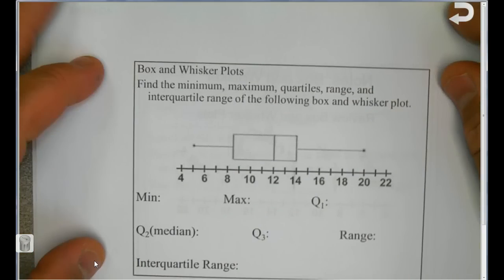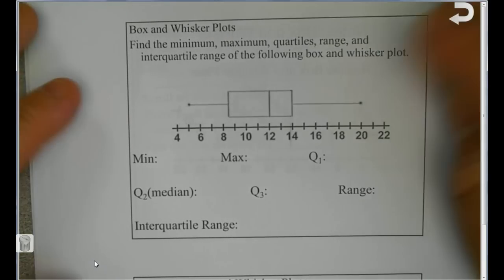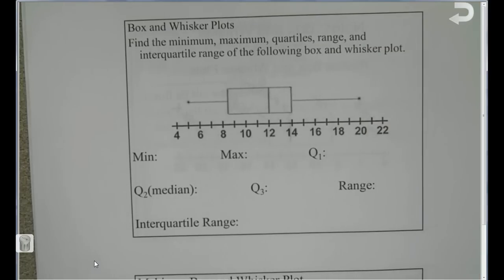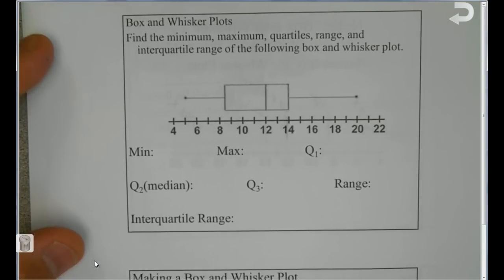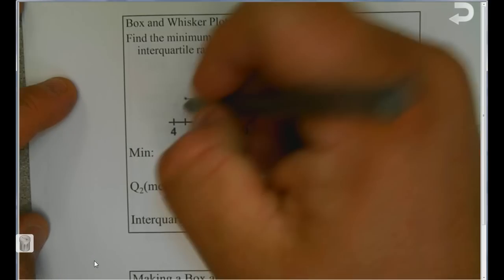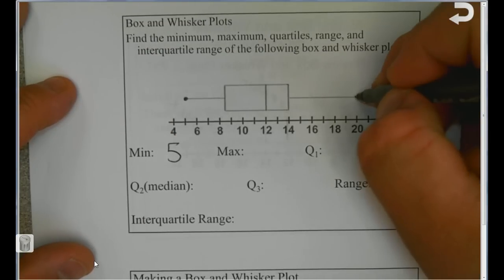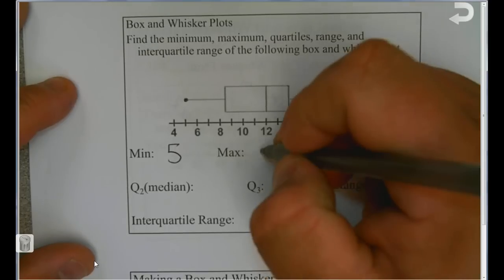Let's talk about reading a box and whisker plot. We have to be able to identify a few things. The minimum is the left bound — in this example the minimum is 5. The maximum is the right bound, so this has a maximum of 20.